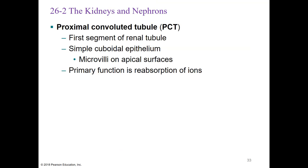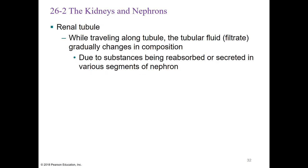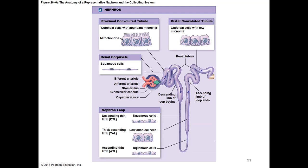The PCT is the first segment of the renal tubule, lined with simple cuboidal epithelium — one cell layer thick, cube-shaped epithelium. These cells have microvilli on their apical surfaces responsible for reabsorption. The PCT's main job is to reabsorb ions and other important substances to put back into the body.